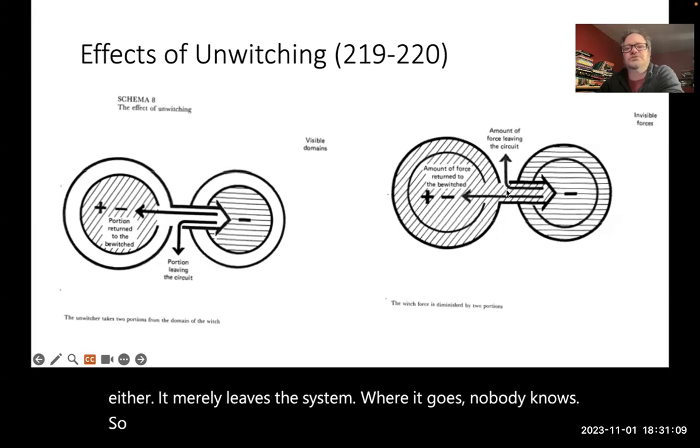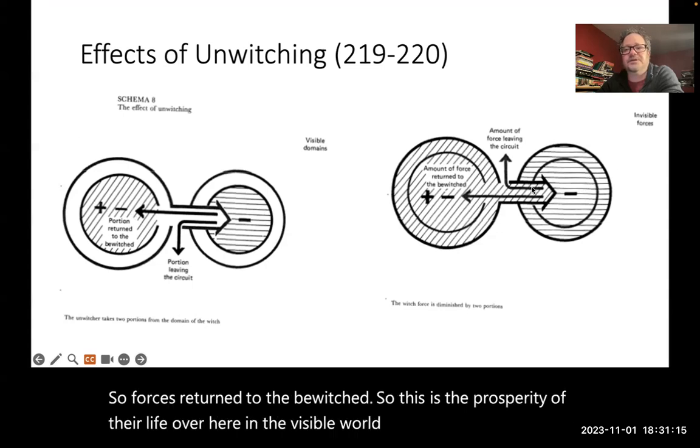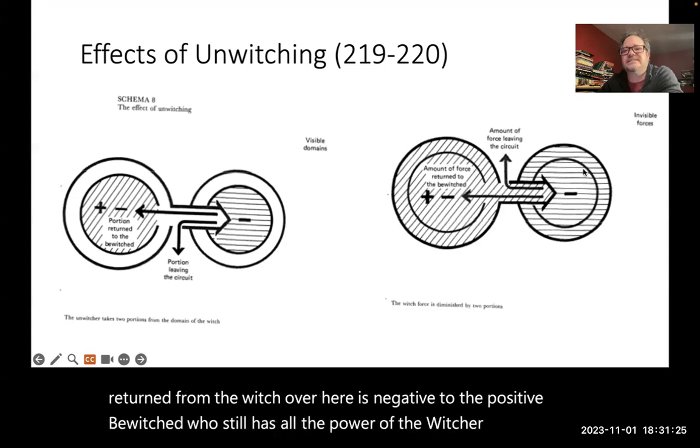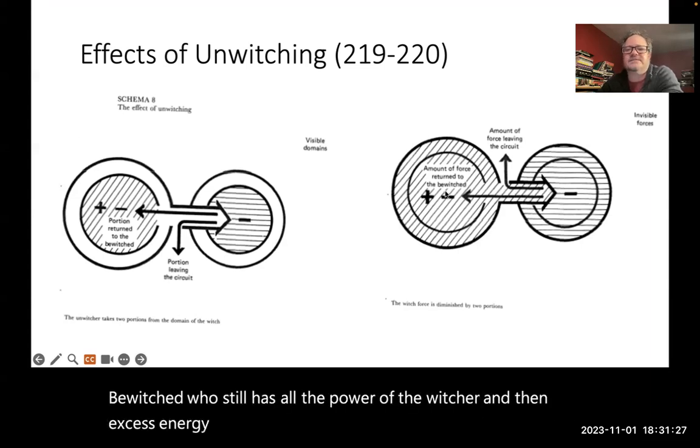So, forces return to the bewitched. So this is the prosperity of their life over here in the visible world. And invisibly, the force is returned from the witch over here, who's negative, to the positive bewitched, who still has all the power of the unwitcher. And then excess energy that does not directly correspond here to the bewitched flows out.